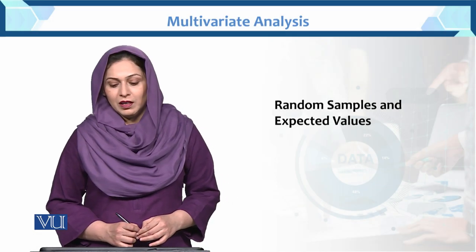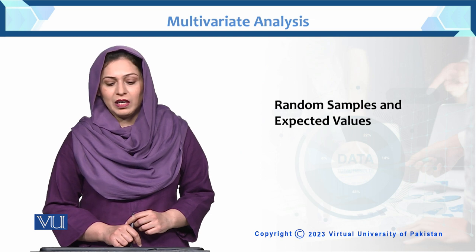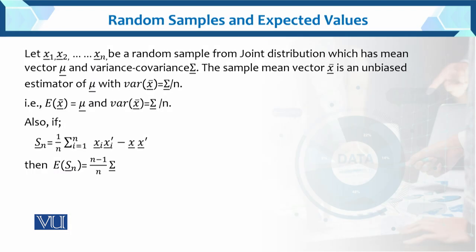Assalamualaikum students. Today we are discussing the random sample and the expected values in multivariate analysis. Here we let x1, x2, up to xn be a random sample from a joint distribution which has mean vector mu and variance covariance matrix sigma.